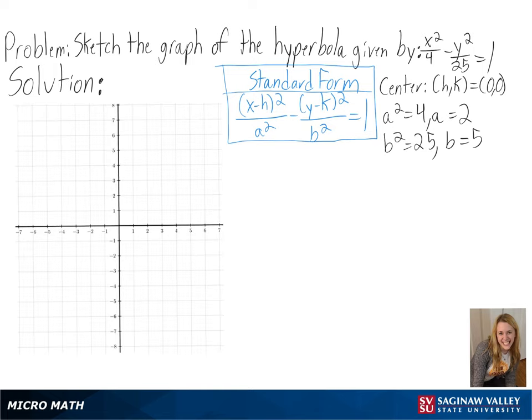Now we can sketch our central rectangle that will have side lengths of 2a and 2b and will be centered at the origin. We can then sketch our asymptotes since they will pass through the corners of our rectangle, and we can use our origin and vertices to find their equations.